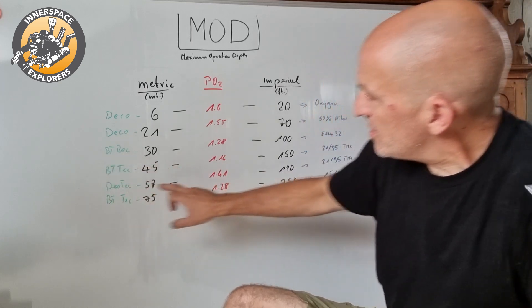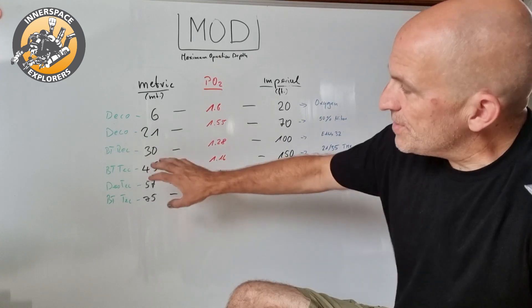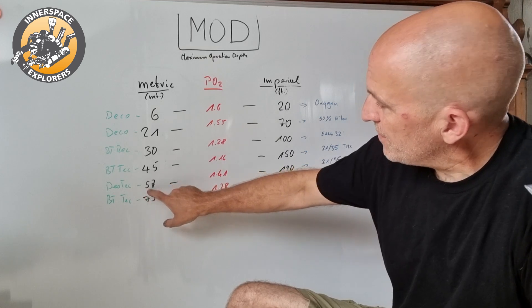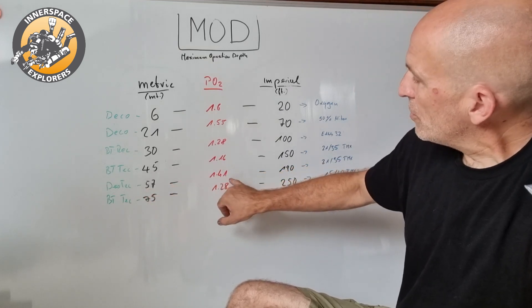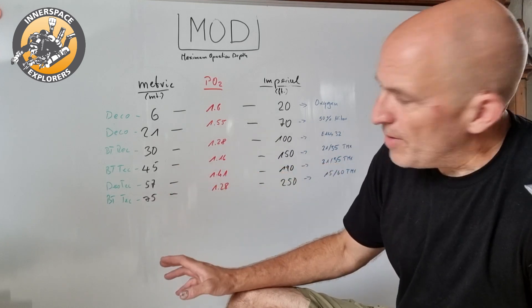Obviously I want to have my PO2 loading lower on a deeper part of the dive. That's where I have my MOD defined by 1.42. These two are making that crystal clear: using it as a bottom gas, 45 meters at 1.16; using as a deco gas, at 57 with 1.42, 150 feet, 190 feet.